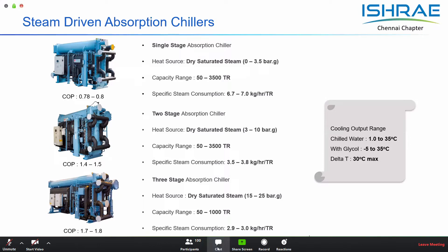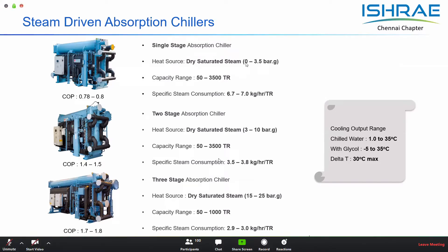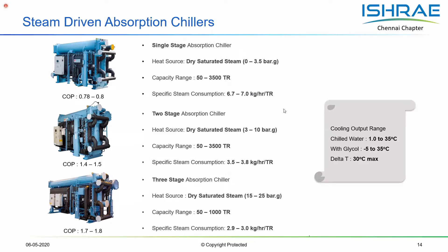Regarding the different types of absorption units, we have absorption units running on steam, which can be of different pressures. A single-stage unit can use steam starting just above atmospheric pressure up to approximately 3 to 3.5 bar as the driving heat source, with capacity ranges from 50 to 500 tons. The specific steam consumption to produce one unit of refrigeration, or one USRT, is approximately 6.7 to 7 kilograms of steam per hour.